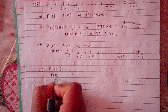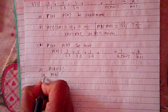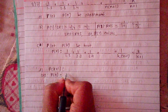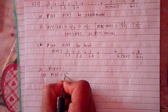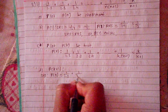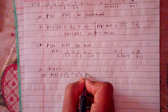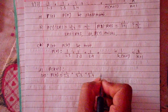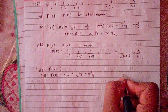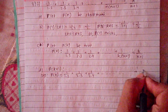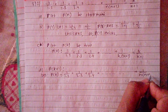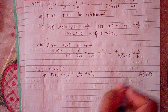For P(k+1), we compute the LHS. LHS = 1/(1·2) + 1/(2·3) + 1/(3·4) + ... + 1/(n(n+1)), now with n replaced by k+1.